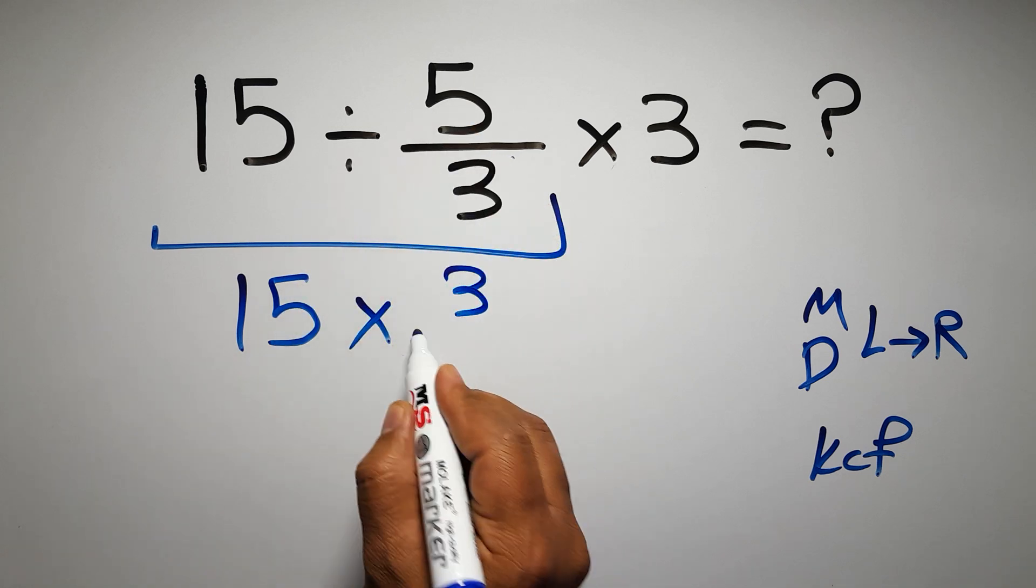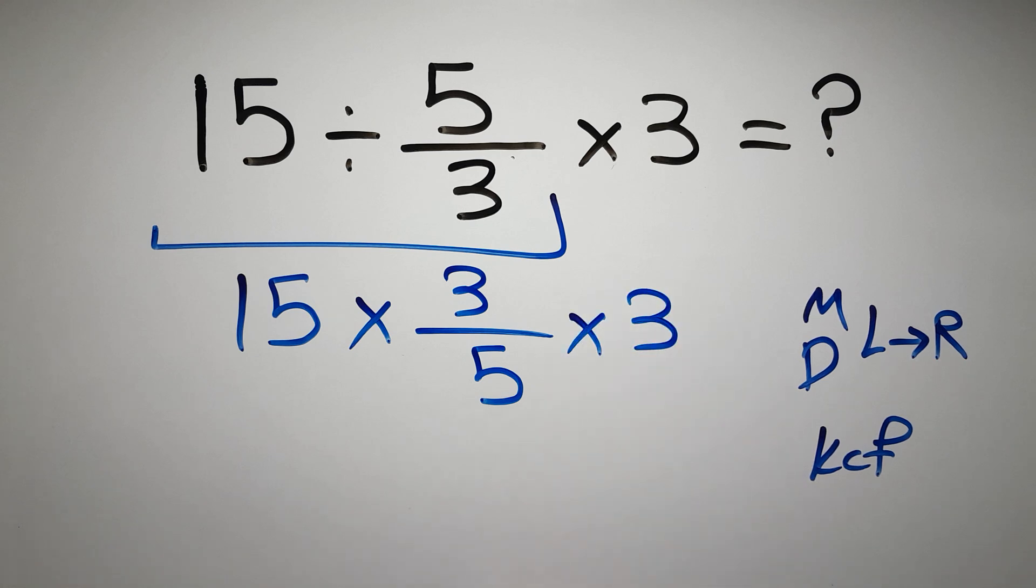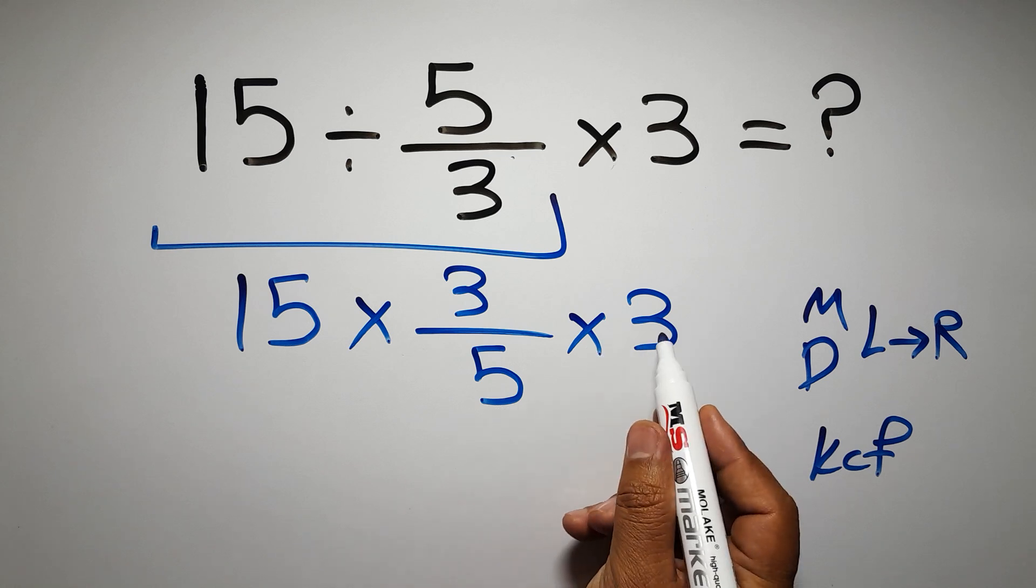And here we have times 3. So 15 times 3 over 5 times 3.